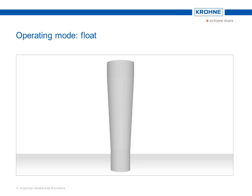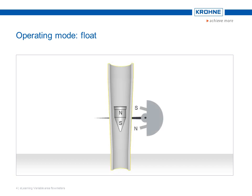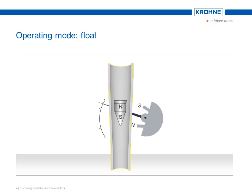With metal cones, the float is not visible, so they have a magnetic transfer onto the pointer. For this purpose, a magnet is built into the float. Through a magnetic coupling installed on the pointer axis, the linear movement of the float is converted into the rotary movement of the pointer, which displays the flow on a scale.